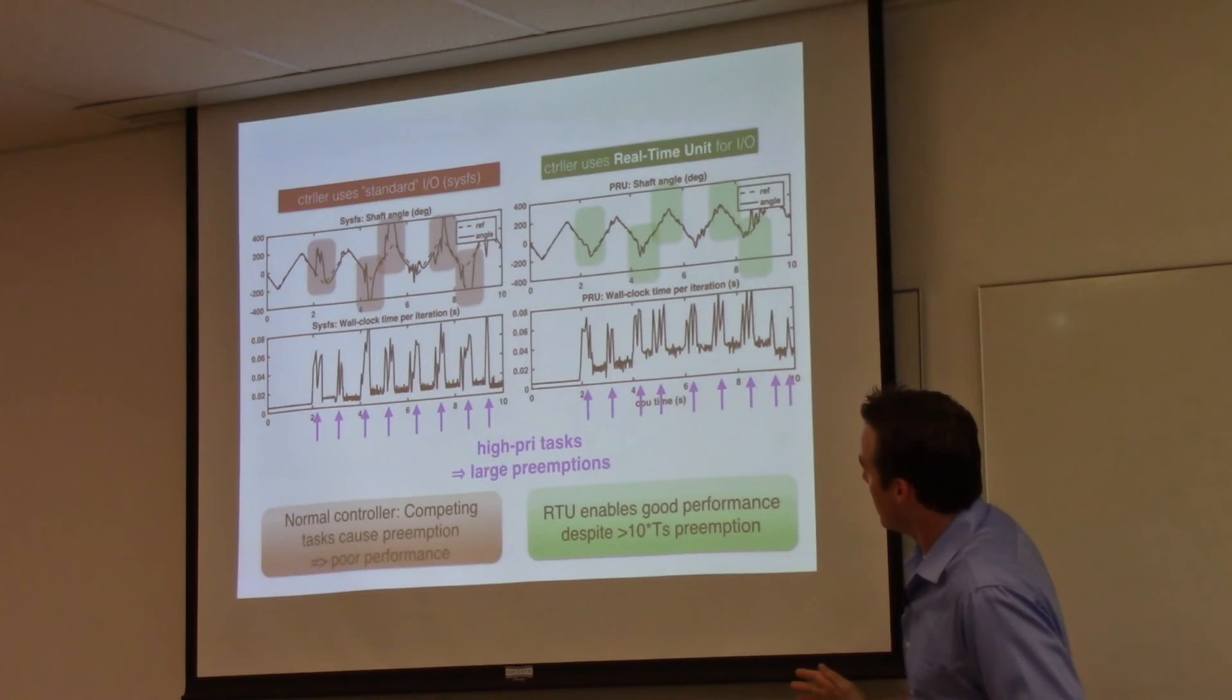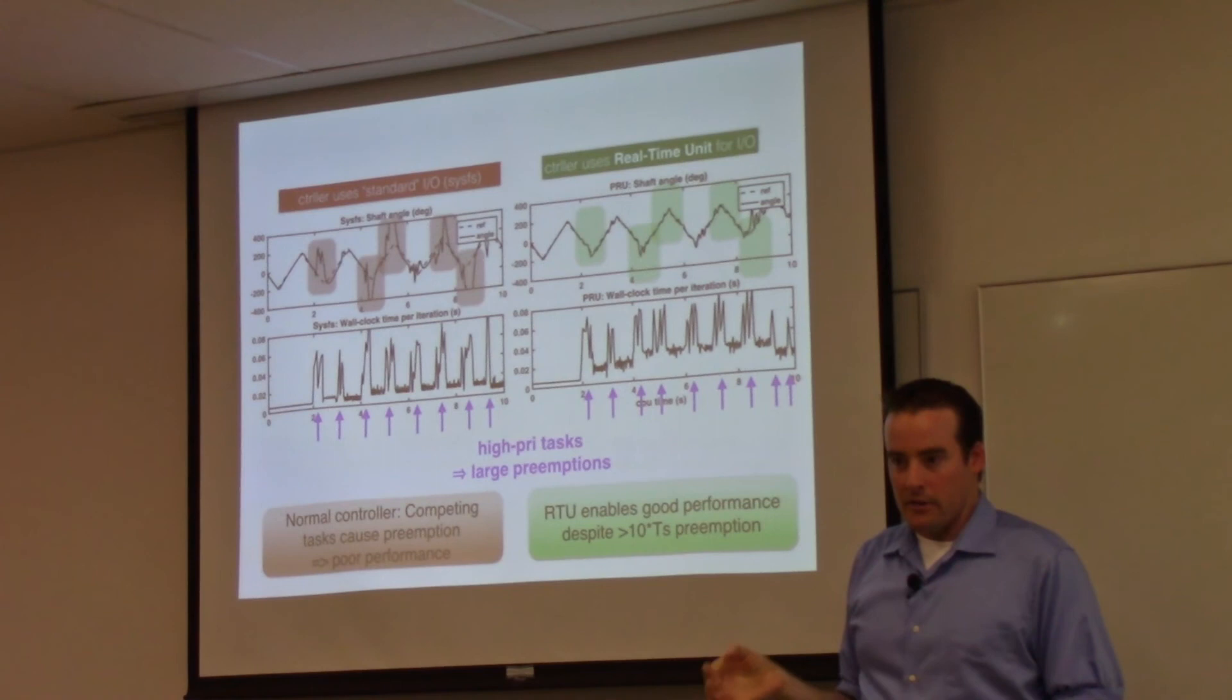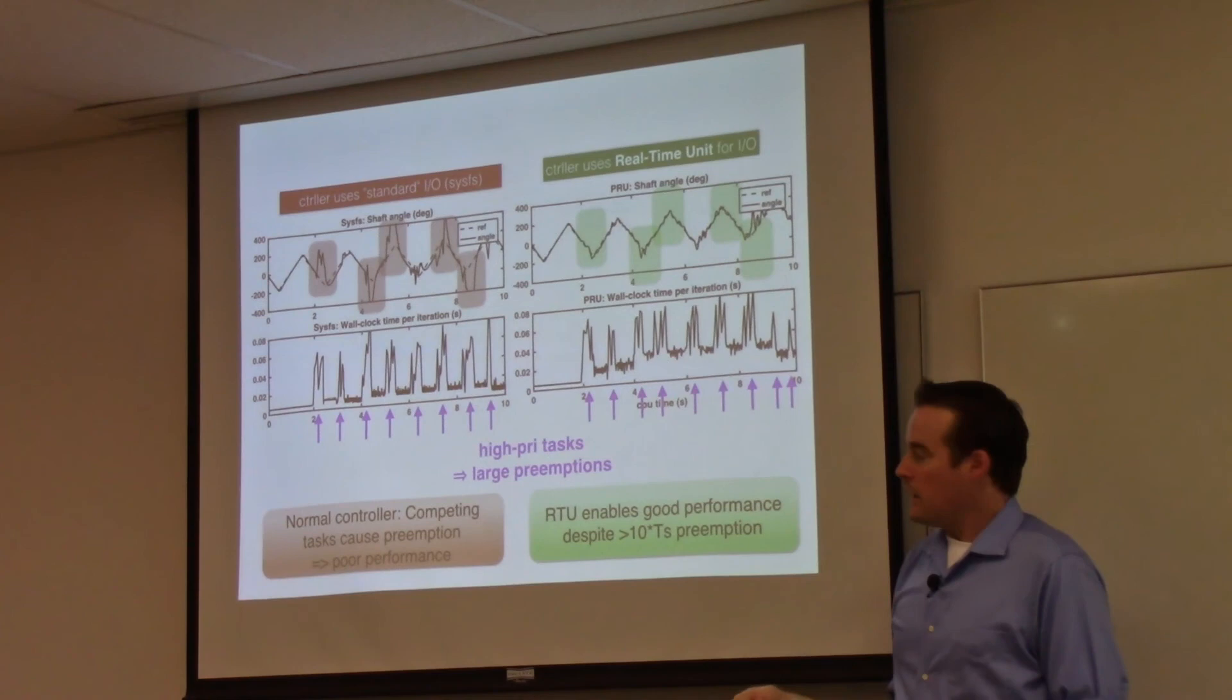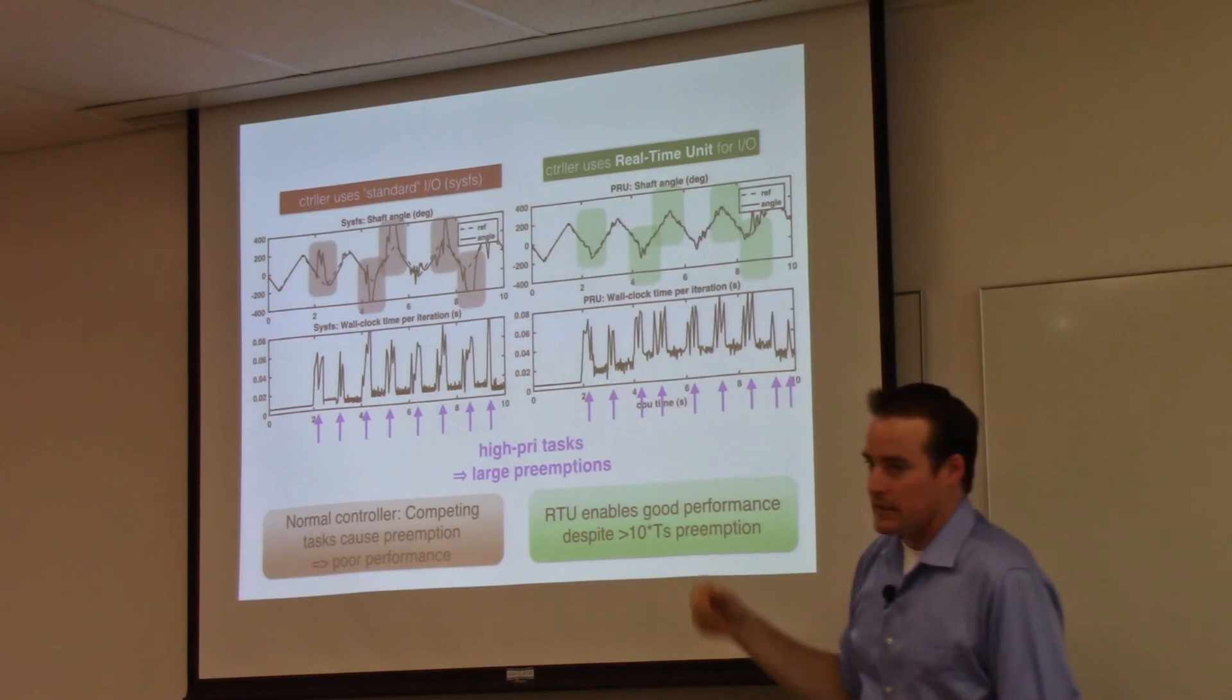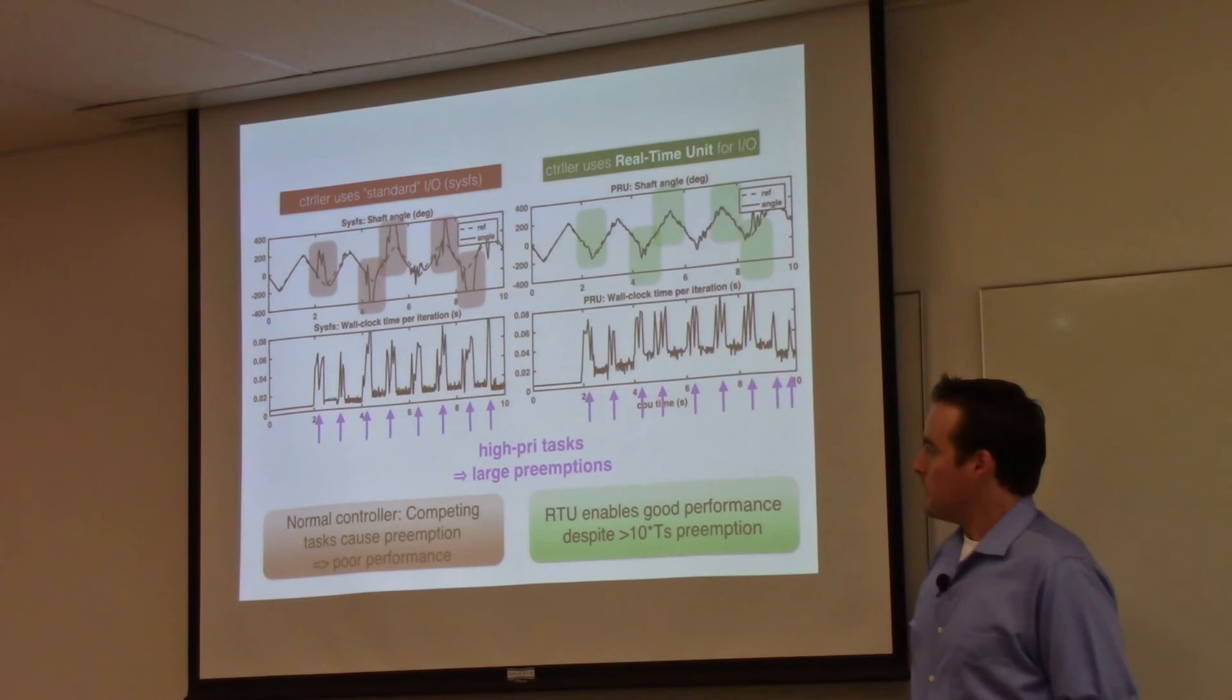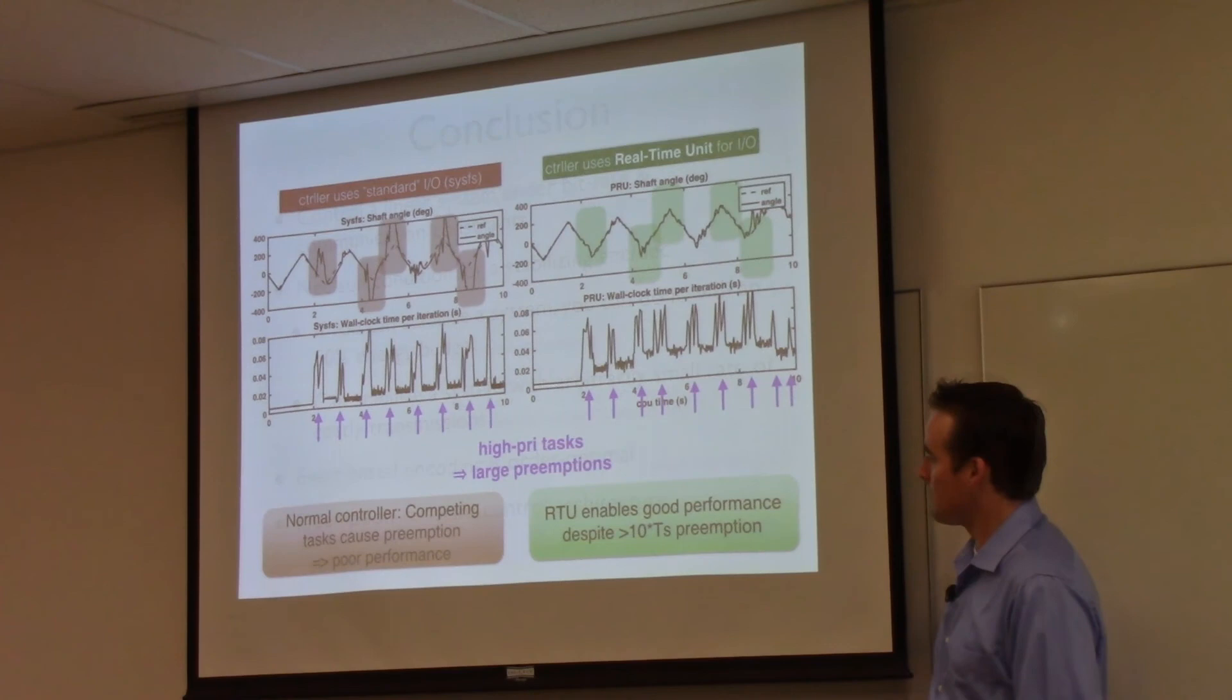Here is the before and after. You can see, you've seen this picture before, the control system going crazy in the red. But when you use the programmable real-time unit on the BeagleBone as an RTU, as a real-time unit, and have it buffer these sensor measurements and actuator things, you can see that it actually does a pretty good job of keeping the controller on track, even in the presence of huge preemptions, preemptions that are up to 80 milliseconds. This thing was designed to run every 5 milliseconds. And suddenly it's running at 50 or 80 milliseconds, like 10 times the sampling period it was expecting. It still does a good job. So we were pretty happy that even this simple idea could still result in pretty good benefits from the control performance.